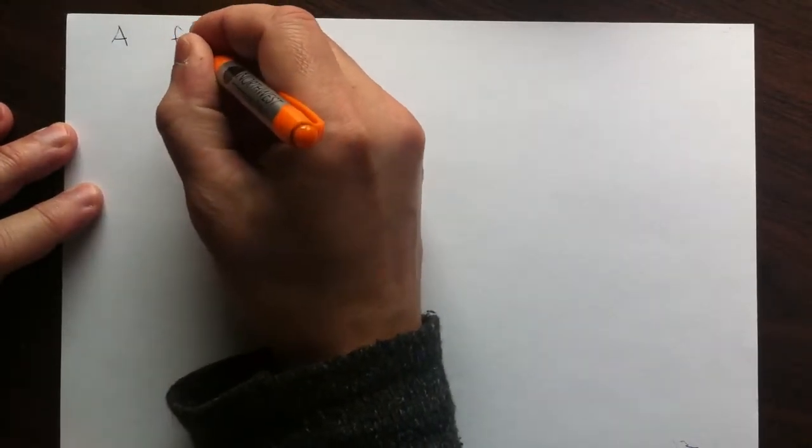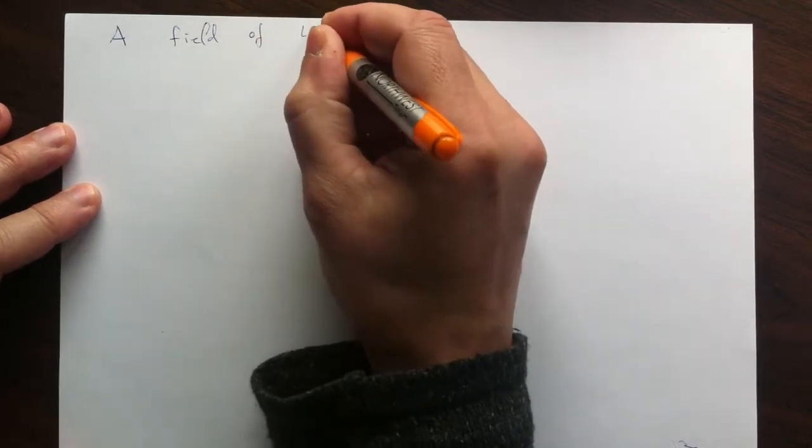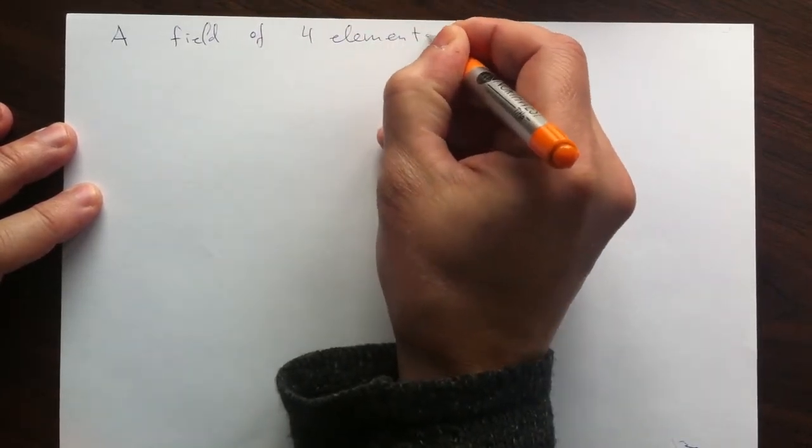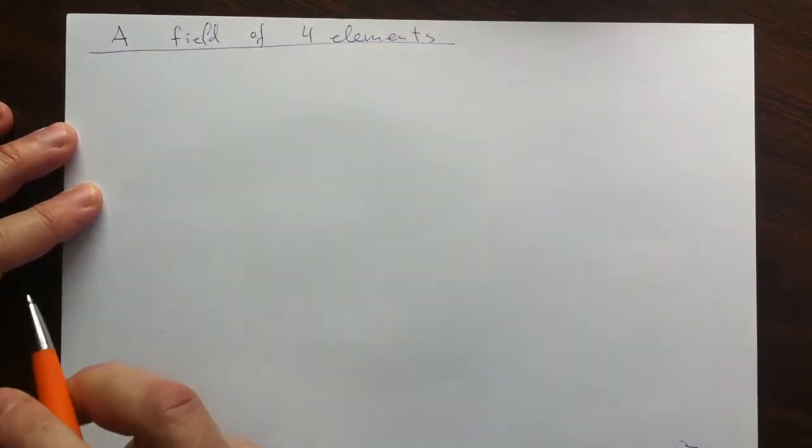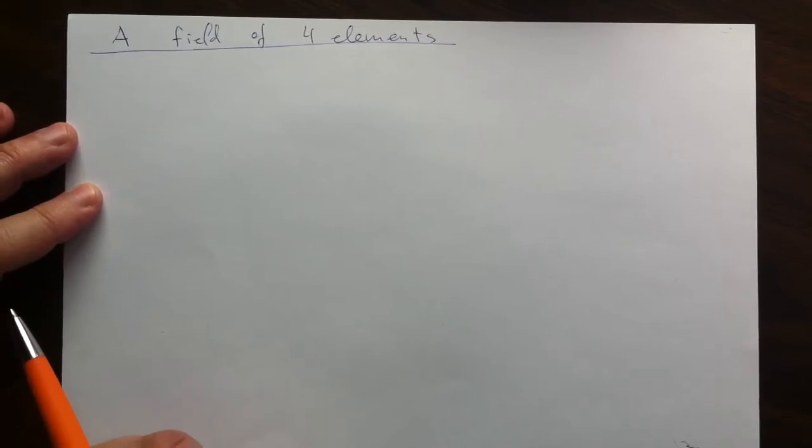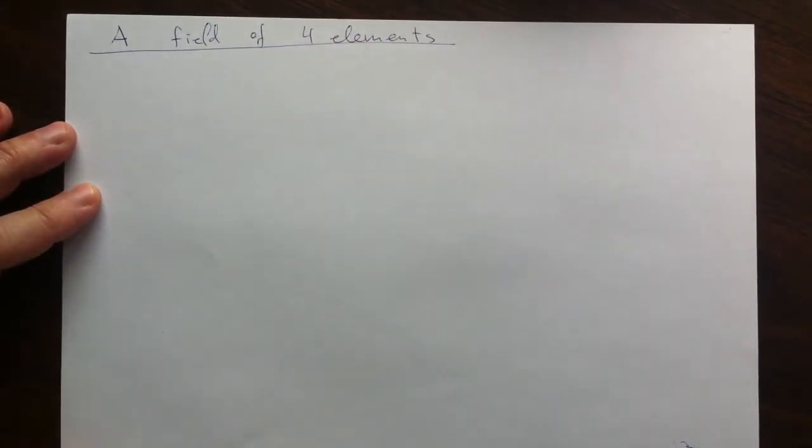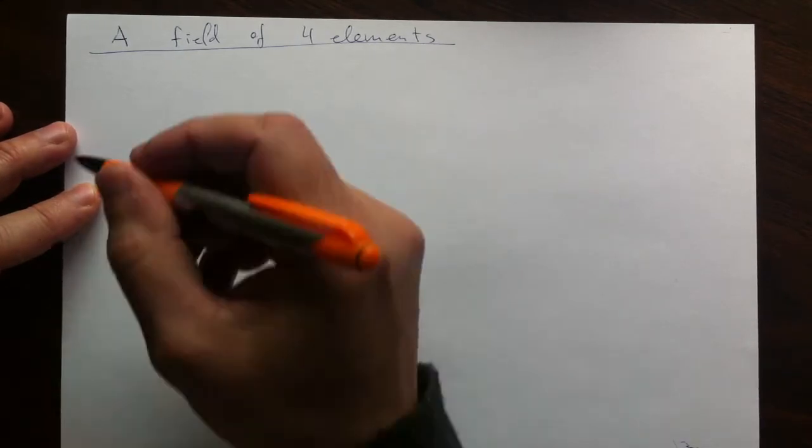Hello! This video is about a field of four elements. So why is four? In one of the previous videos I argued that there are no fields of six elements. More generally, the number of elements in a finite field has to be a power of prime. And four happens to be the smallest such power which is not prime itself.